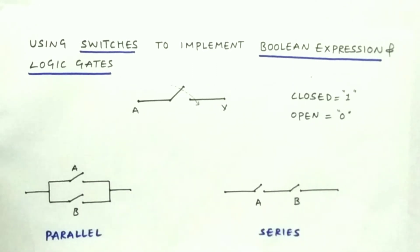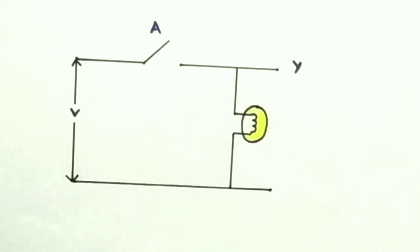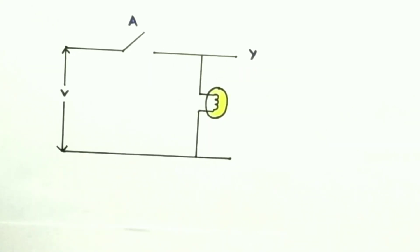Switches can be connected in two fashions: either in parallel or in series. Now let us implement boolean expressions and logic gates using switches. This is a simple circuit where we have a source, an output Y, and a bulb which glows when current flows, along with a switch A. I'll keep the switches open for representation. When the switch is closed, the current will flow and the bulb will glow.